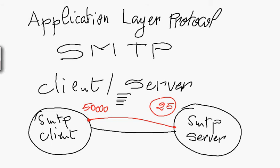The purpose of establishing this TCP connection is to send the message to the SMTP server. The email will be sent to the SMTP server through this TCP connection and received at port 25 on the SMTP server side. It relies on a single connection, in which there will be a series of commands, and at the end the message itself, which needs to be transferred to the SMTP server.